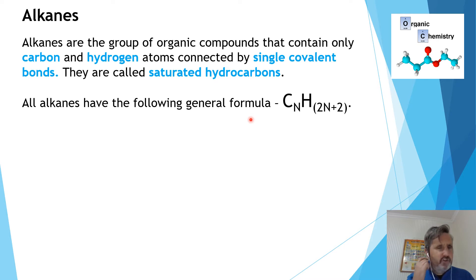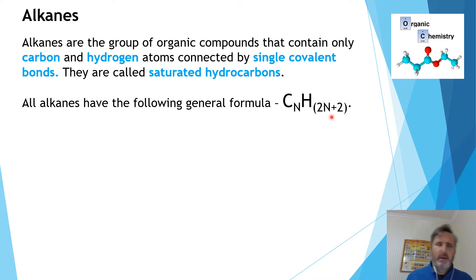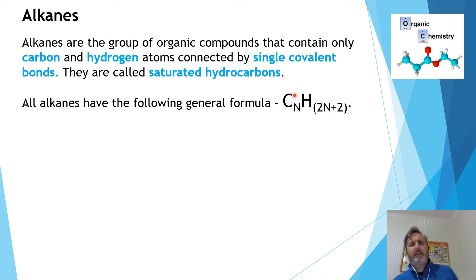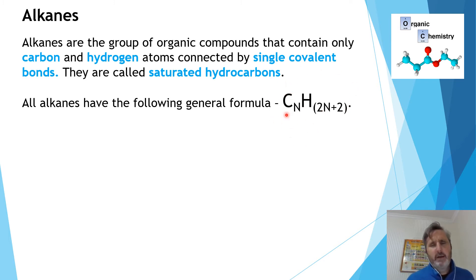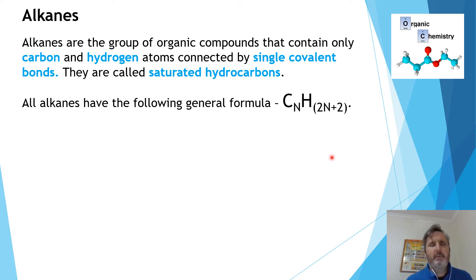Alkanes have single covalent bonds and this general formula: CnH(2n+2). What this means is if I wanted to work out the formula for the molecule with two carbons, it would be C2H(2×2+2) = C2H6. If it had three carbons, it would be C3H8. We get this pattern.